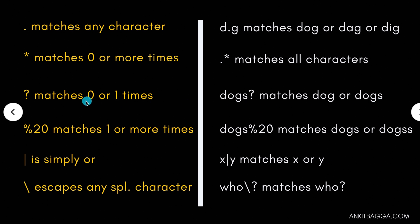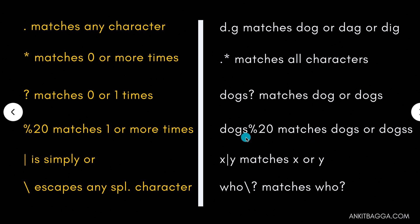Moving on to the fourth one — it's the plus sign, written as %20 in URLs, which you must have seen. This matches one or more times. So dogs-plus would match dogs or dogss. S can appear once, as in dogs, or more than once, as in dogs with double S.